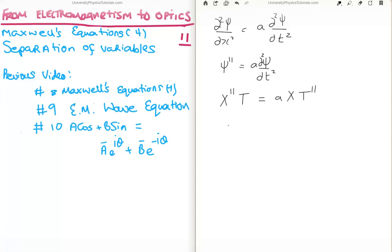The next thing we do is we separate out the function. So we get capital X double prime over capital X is equal to A times capital T double prime divided by T. Now here's where we have a small bit of a subtlety. We have a function of T on the right and a function of X on the left.